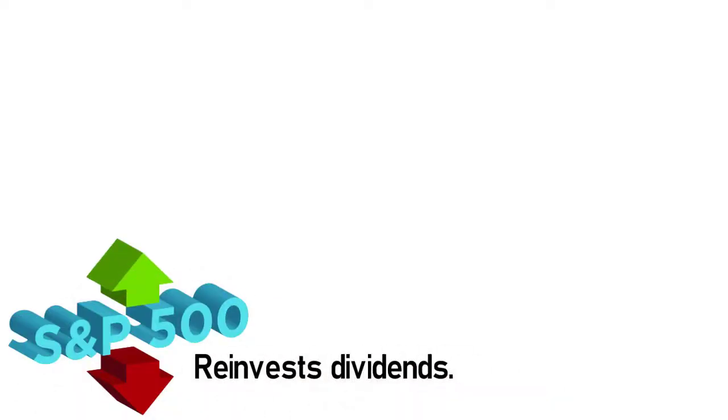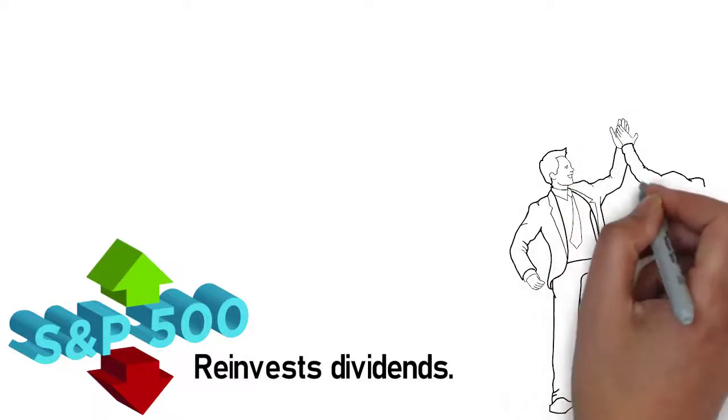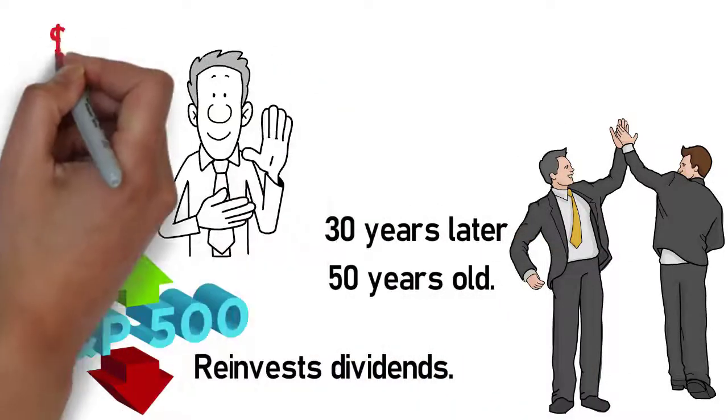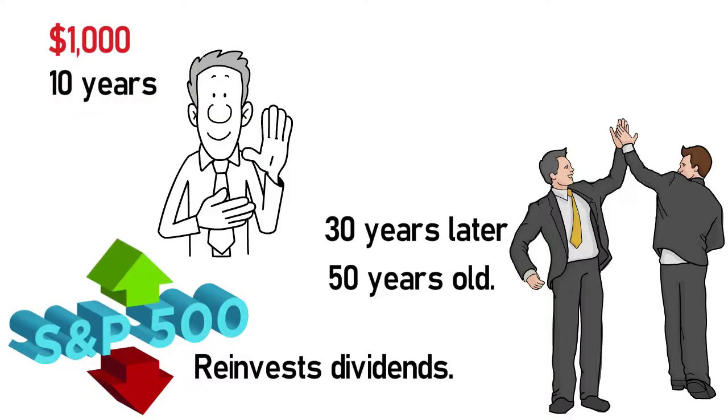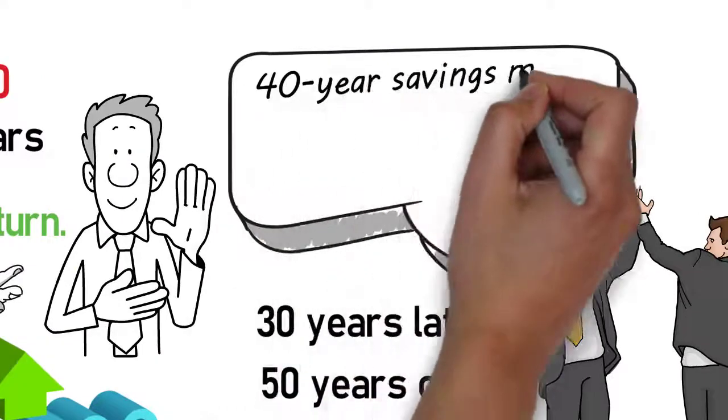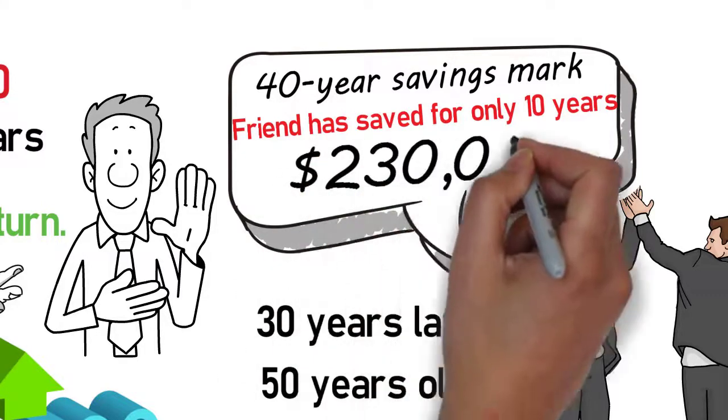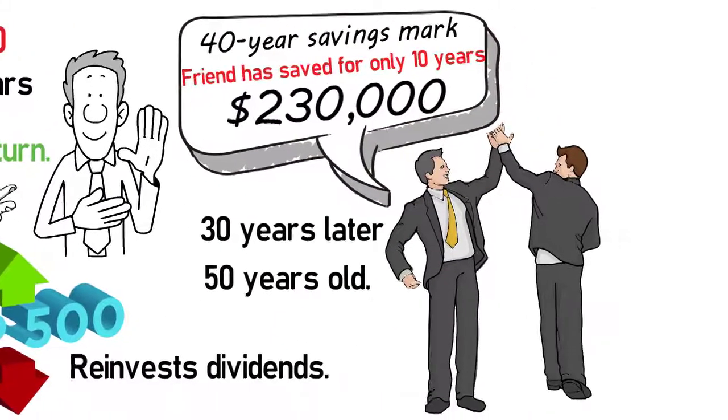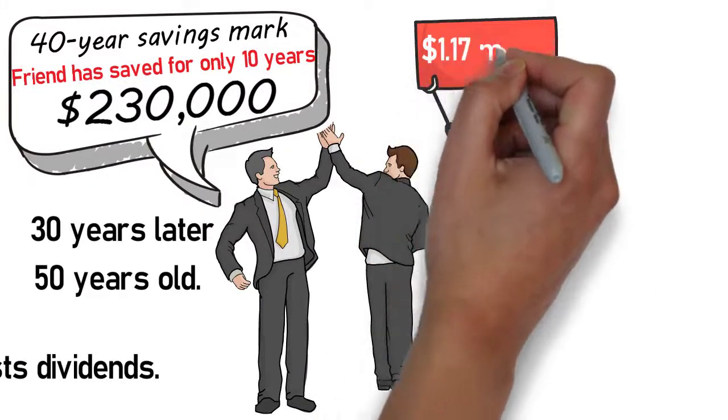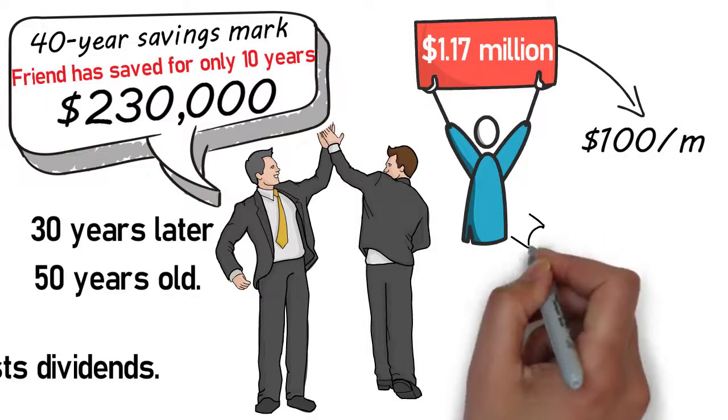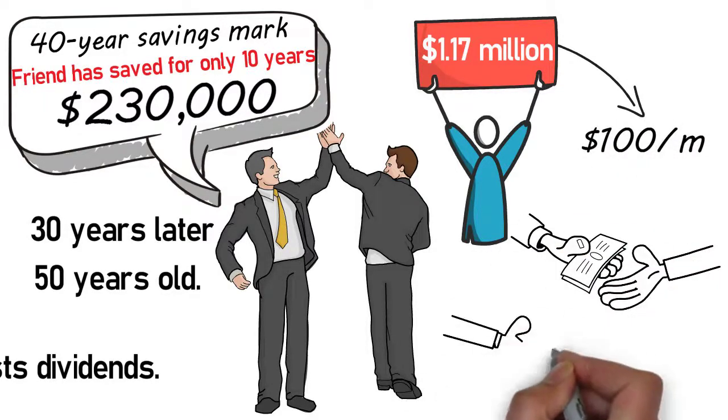Now let's imagine that your best friend who is the same age doesn't begin until 30 years later when he or she is around 50 years old. Your friend invests $1,000 a month for 10 years averaging the same 12% return. When you hit your 40 year savings mark and your friend has saved for only 10 years, your friend will have generated about $230,000 in savings, but you will have earned a bit more than 1.17 million dollars with only $100 per month invested. Even though your best friend was investing 10 times as much as you, the wonder of compound interest makes you five times richer.